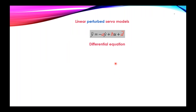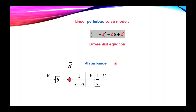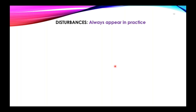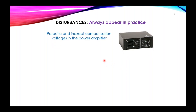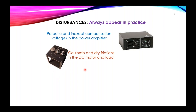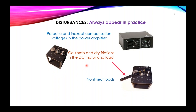In this way, we have two models for the servo: the first is a differential equation and the second is a transfer function-like model written using a block diagram. Disturbances always appear in practice. In the case of servo systems, they correspond to parasitic voltages in the power amplifier, Coulomb and dry friction in the DC motor and load, nonlinear load driven by the motor, and parametric uncertainty in the servo model, which may also be recast as a disturbance.